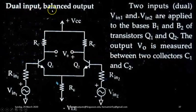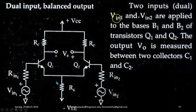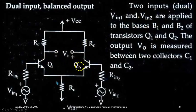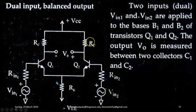First: dual input, balanced output. As shown in this diagram, two inputs VIN1 and VIN2 are applied to the bases B1 and B2 of transistors Q1 and Q2. The output Vout is measured between the two collectors C1 and C2. All components are matched — both RC resistors are identical, both transistors are identical, and both RIN1 and RIN2 are also identical.